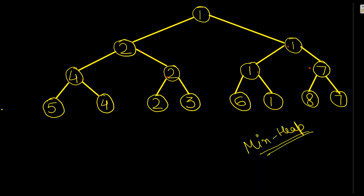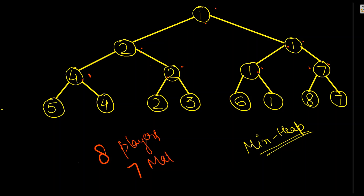We have eight teams, and to get the winner, seven matches were conducted. So we can say if there are N teams, N minus one matches will be conducted to get the winner.